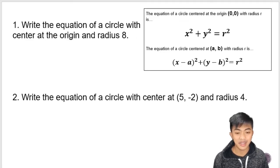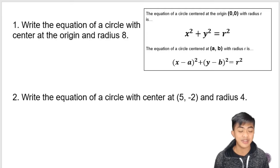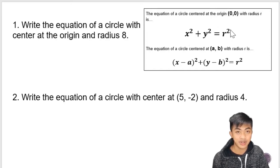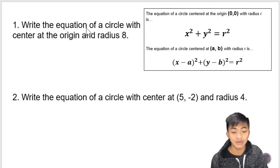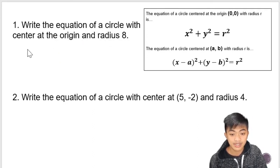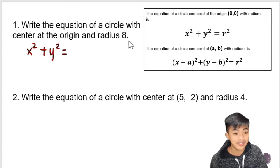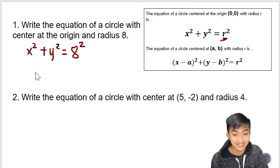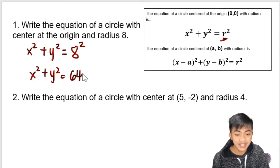So number one: write the equation of a circle with center at the origin and radius 8. Since the center is at the origin, the equation will be x squared plus y squared is equal to r squared. The radius is given as 8, so we replace r with 8 and we square it. We can actually simplify this. So this is the equation of the circle described in number one.